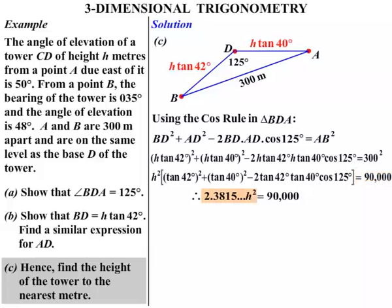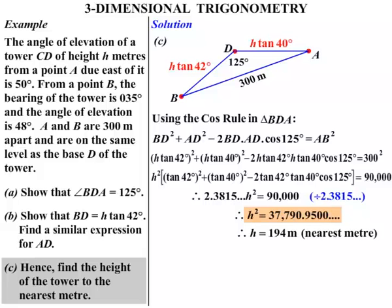Now to get the H squared at the moment by itself, we need to divide through by that 2.3815. We get that H squared therefore is 37,790.95 etc. And final step, if H squared equals that, we need to take the square root. We do that, therefore we get that H is 194 meters. We've rounded that off to the nearest meter.